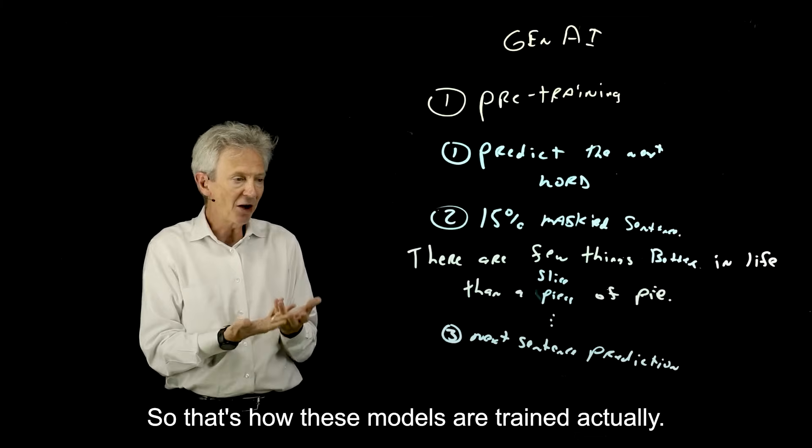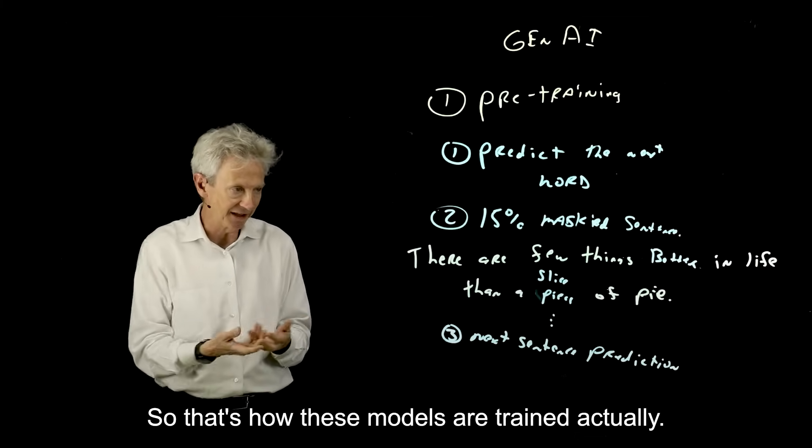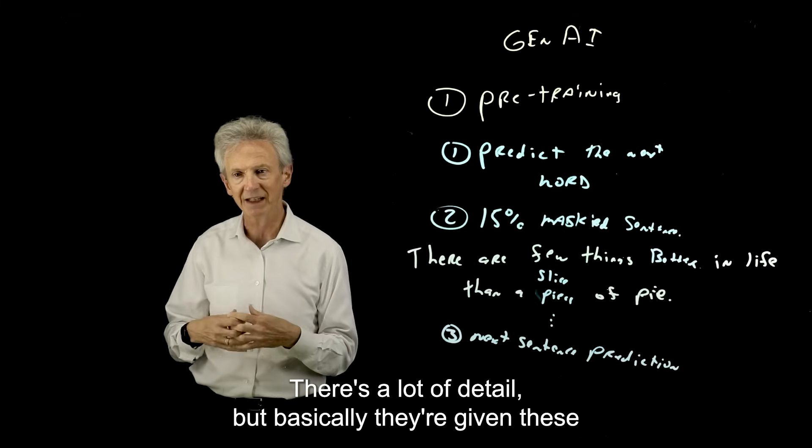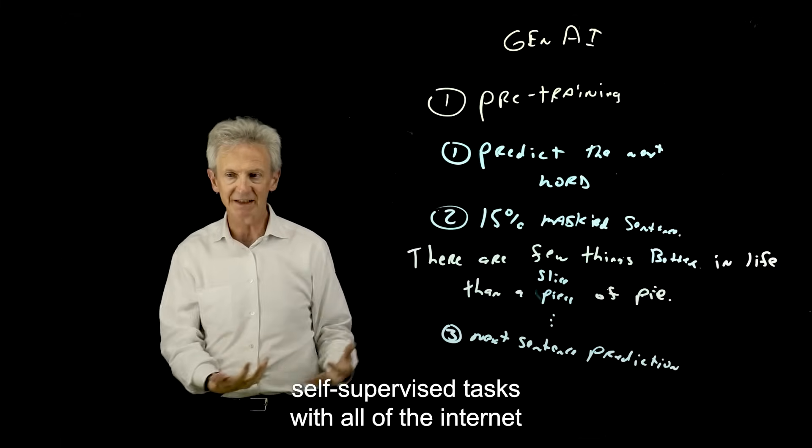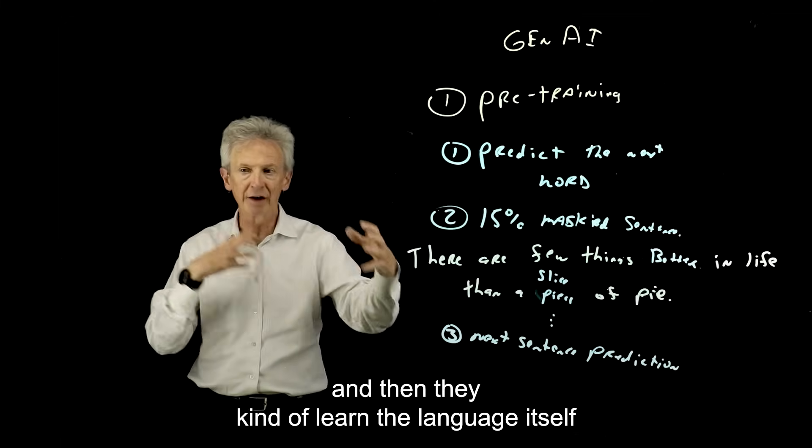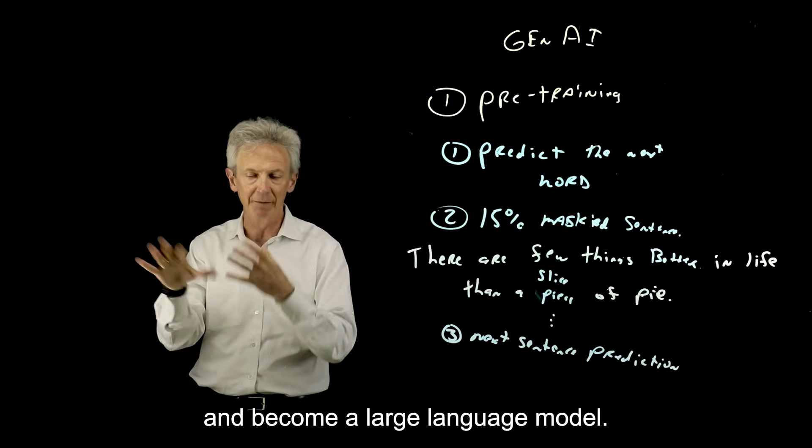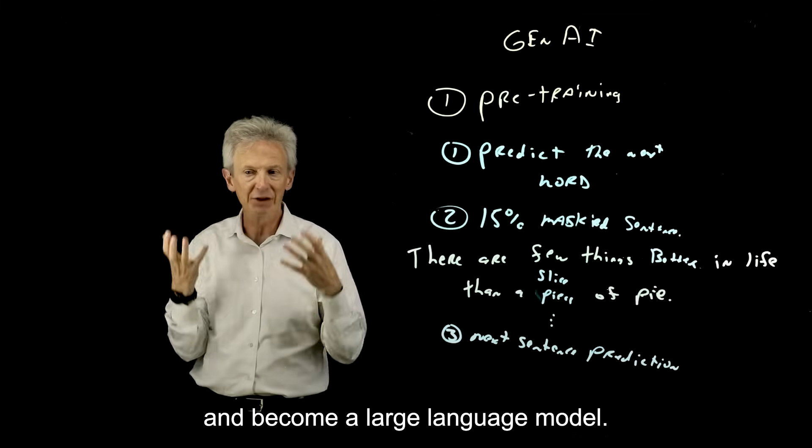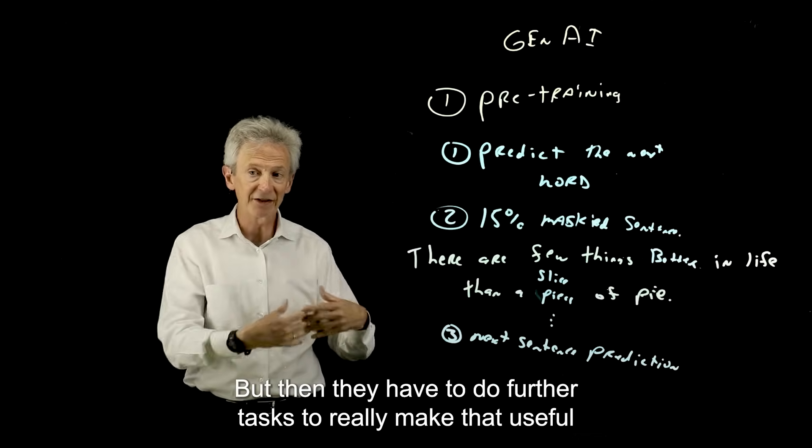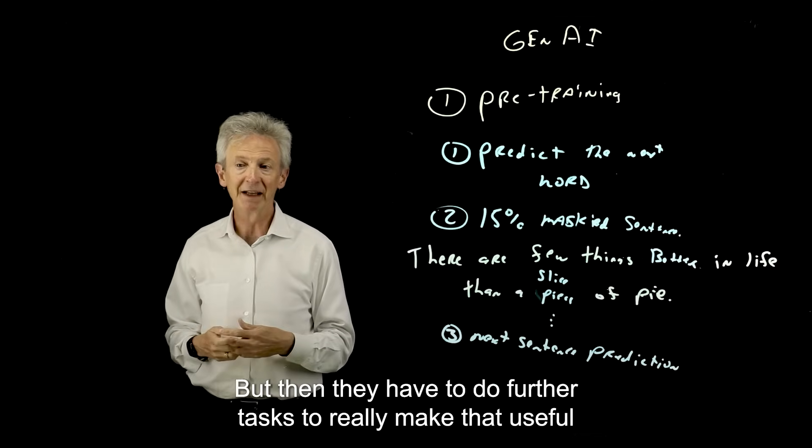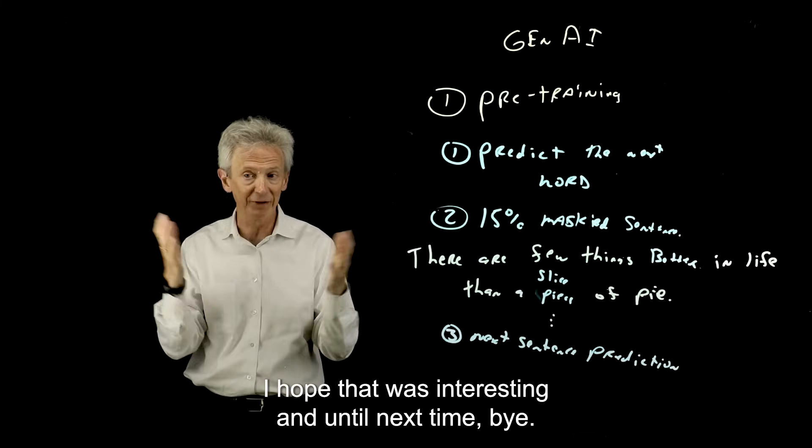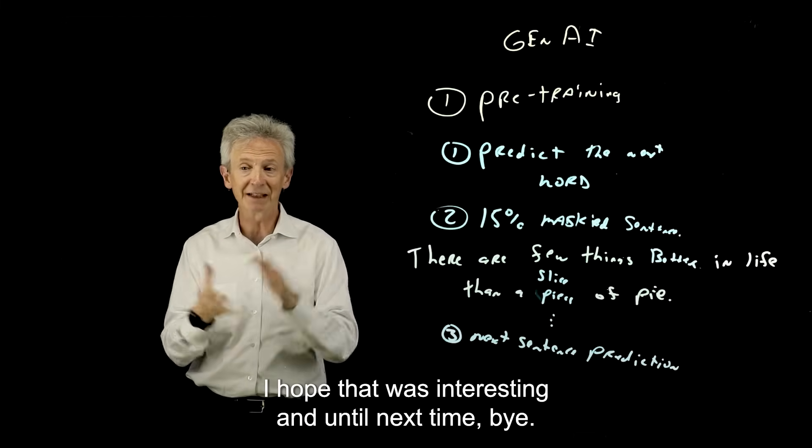So that's how these models are trained, actually. There's a lot of detail, but basically they're given these self-supervised tasks with all of the Internet, and then they kind of learn the language itself and become a large language model. But then they have to do further tasks to really make that useful. So that's what pre-training is all about. I hope that was interesting. And until next time, bye.